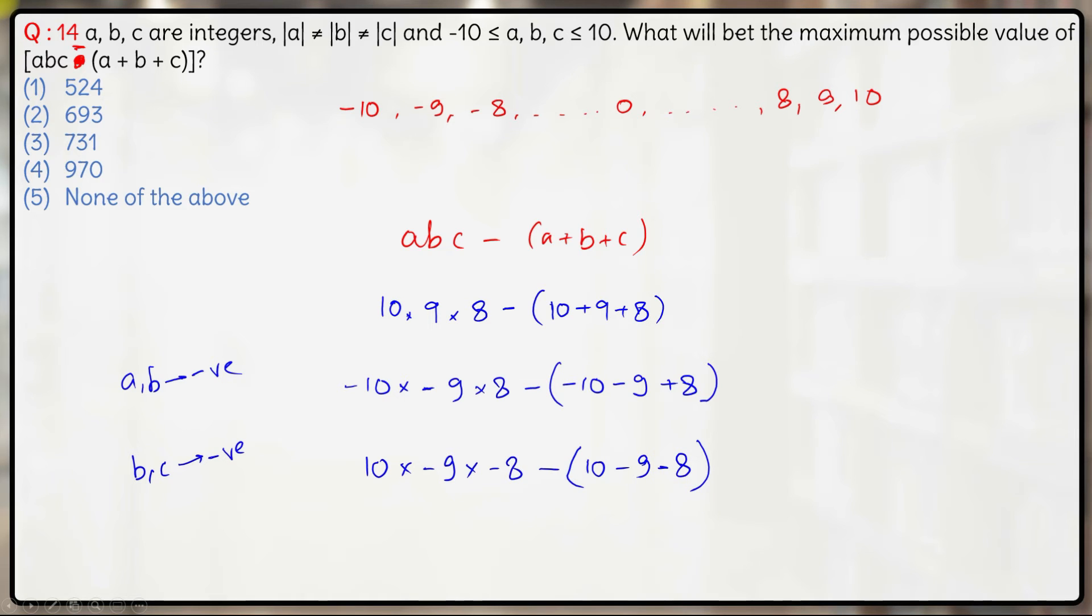Now your goal was to obviously maximize ABC, but your goal should also be to minimize A plus B plus C. This should be minimum. Now if this should be minimum, it would help us if we take the negative of the negative values of 10 and 9. Minus 10 minus 9 plus 8 will be lesser than 10 minus 9 minus 8.